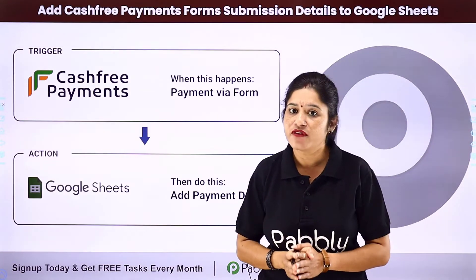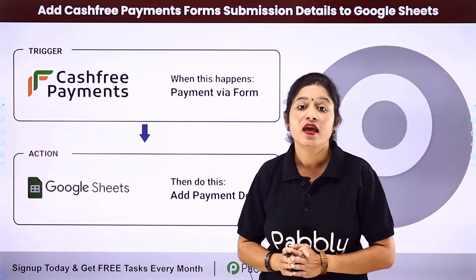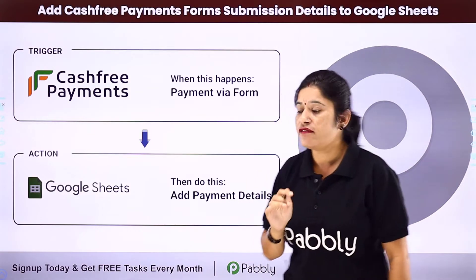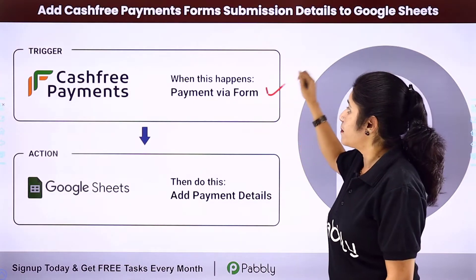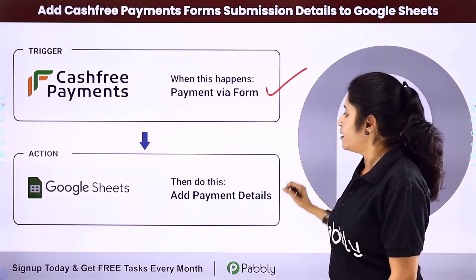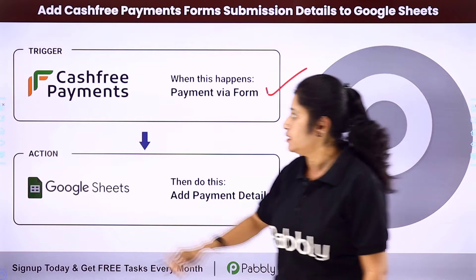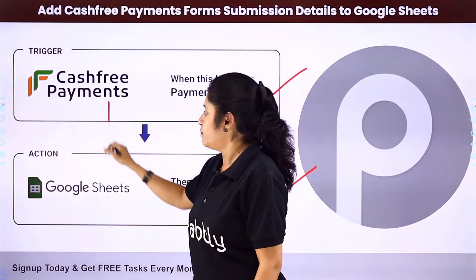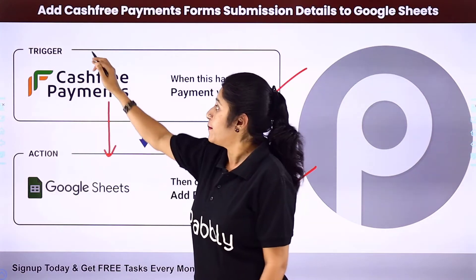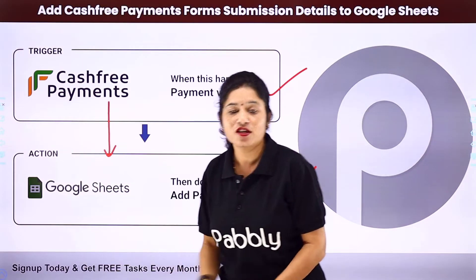Suppose you have created a payment form using your Cashfree payment gateway to collect payments. Whenever a payment is received via form submission, you want the payment details to be automatically added to your Google Sheet. For that you need to integrate your Cashfree Payments account with Google Sheets, where the trigger application would be Cashfree and the action application would be Google Sheets.